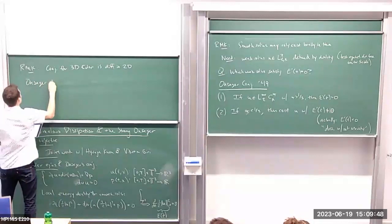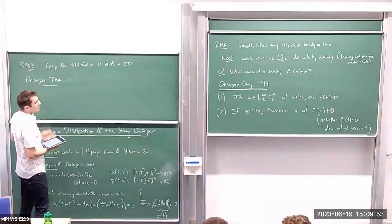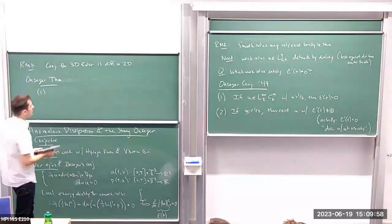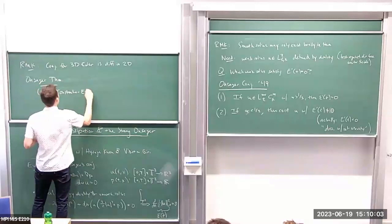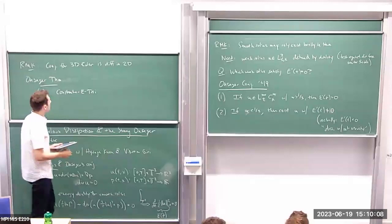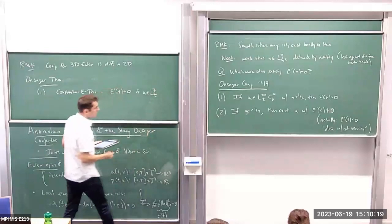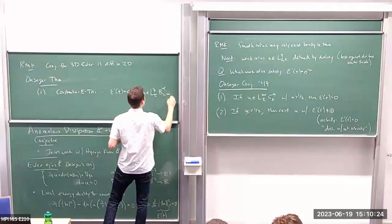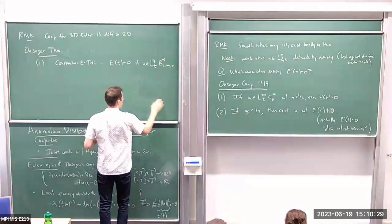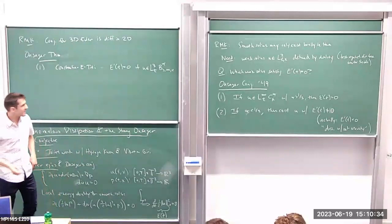Onsager's conjecture has remarkably been proven as a theorem. The first half was proven following an earlier work of Eyink. What they showed is that E'(t) equals zero if u is in L³_t B^alpha_{3,∞} for alpha greater than one-third. We'll be using Besov spaces throughout this talk, so I should write down the definition of that norm.